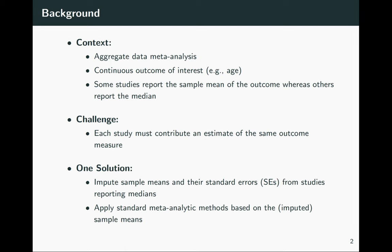Today I'm going to be focusing on one of these solutions, which essentially goes as follows: you first impute the sample means and estimates of their standard errors from all the studies that report medians. Once doing so, you then apply standard meta-analytic methods based on these imputed sample means from all the primary studies.